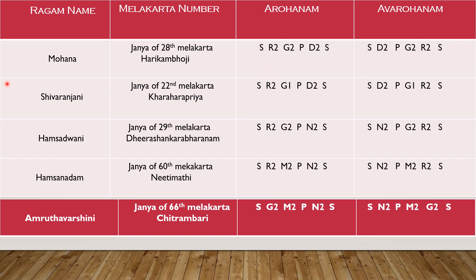The opposite of Mohana ragam is Shivaranjani. Shivaranjani is a Janya raga of the 22nd Melakarta Kharaharapriya. Only the Gandharam changes between Mohana and Shivaranjani — Sariga is Mohana, and Sariga with Sadharana Gandharam is Shivaranjani. Shivaranjani is a sad ragam, opposite of Mohana. It is easy to remember.